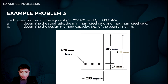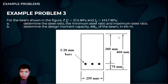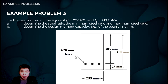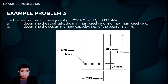For our beam, the width is 255 mm, effective depth is 385 mm, total depth is 460 mm, and the concrete cover is 75 mm. We have three 28-millimeter diameter reinforcement bars. So let's solve this.